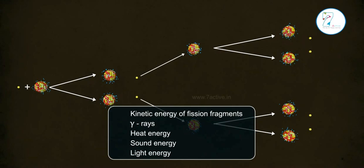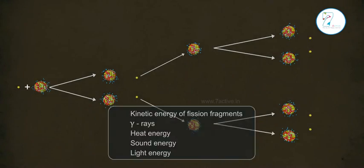Point C: Energy is released in the form of kinetic energy of fission fragments. Some of the energy is also released in the form of gamma rays, heat energy, sound energy, and light energy.